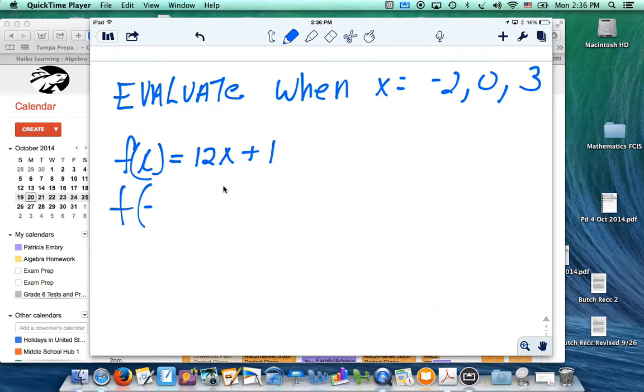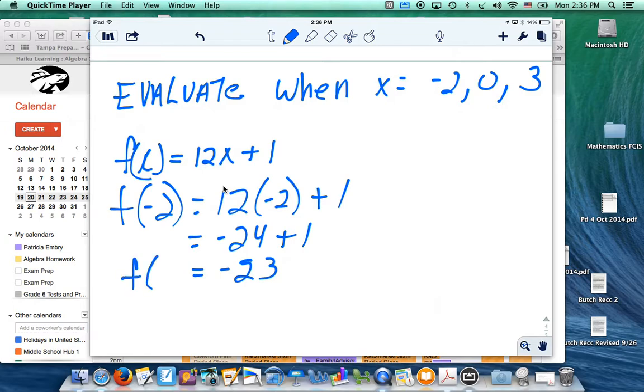Well, let's do negative 2 first. f, plug in the negative 2. We have negative 24 plus 1. That's going to be negative 23. f of negative 2 is negative 23.